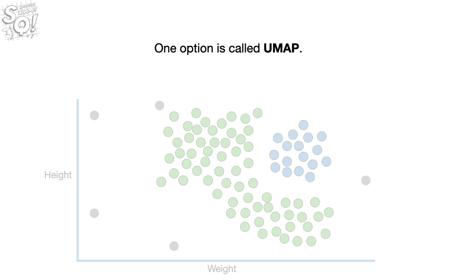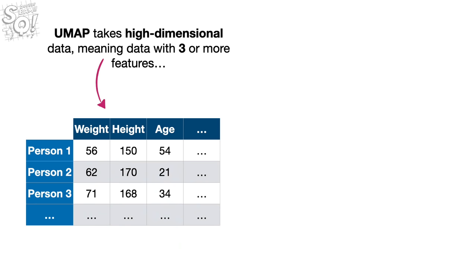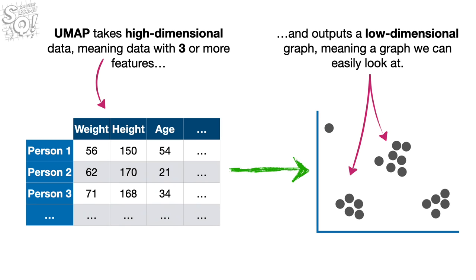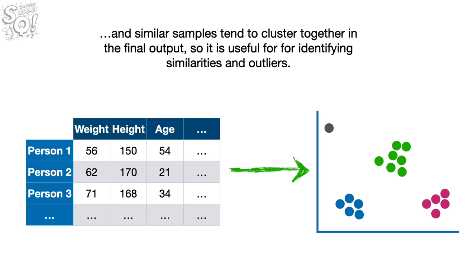One option is called UMAP — Uniform Manifold Approximation and Projection. UMAP takes high-dimensional data, meaning data with three or more features, and outputs a low-dimensional graph that we can easily look at. UMAP is popular because it is relatively fast even with large datasets, and similar samples tend to cluster together in the final output, making it useful for identifying similarities and outliers.